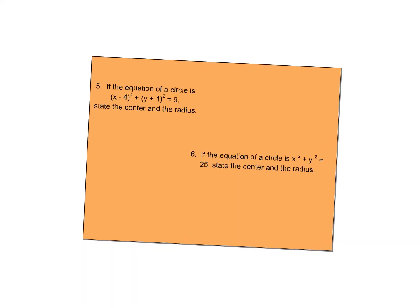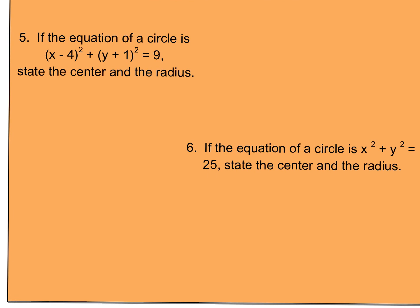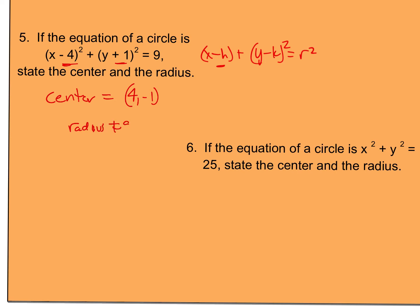Now let's work backwards — given an equation, find the center and radius. Be careful with signs: you want to take the opposite of what's there. Using the form x minus h squared plus y minus k squared equals r squared, if it's minus I just want the number, if it's plus I want the opposite. So my center would be (4, -1). My radius squared equals 9, which means my radius equals 3.